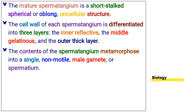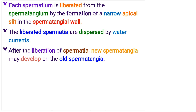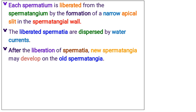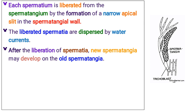The cell wall of each spermatangium is differentiated into three layers: the inner refractive, the middle gelatinous, and the outer thick layer. The contents of the spermatangium metamorphose into a single, non-motile male gamete, or spermatium. Each spermatium is liberated from the spermatangium by the formation of a narrow apical slit in the spermatangial wall. The liberated spermatia are dispersed by water currents. After the liberation of spermatia, new spermatangia may develop on the old spermatangia.